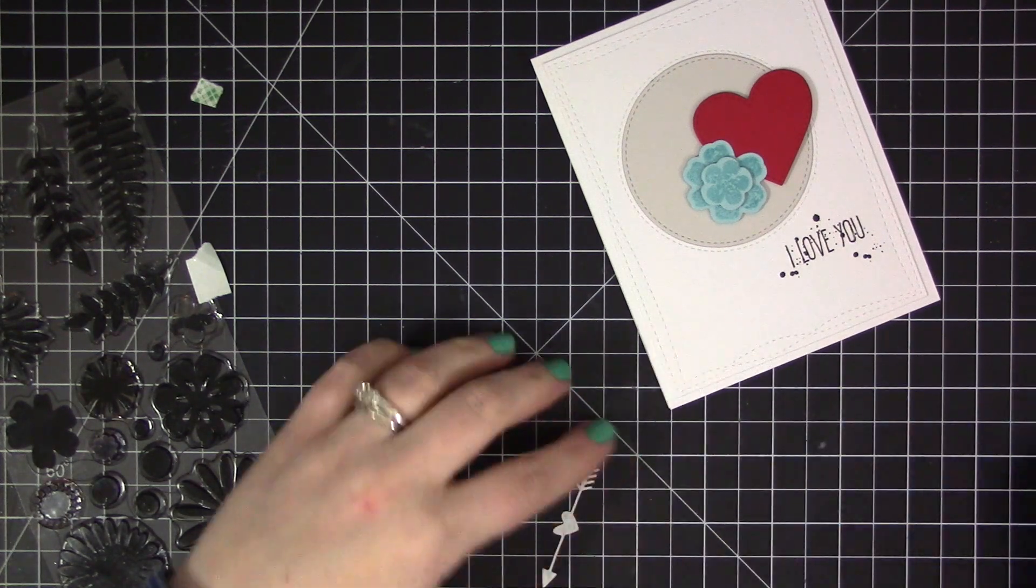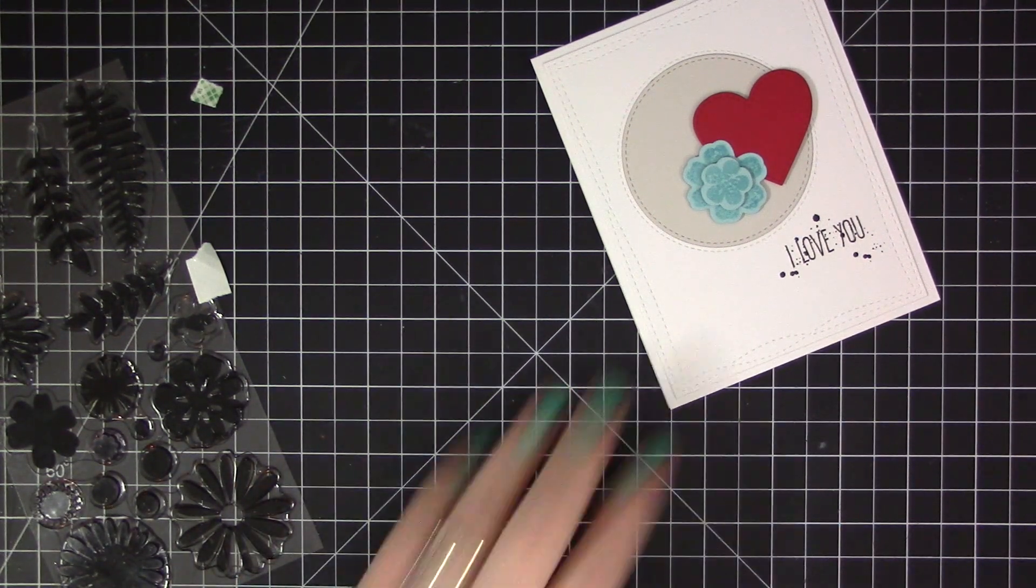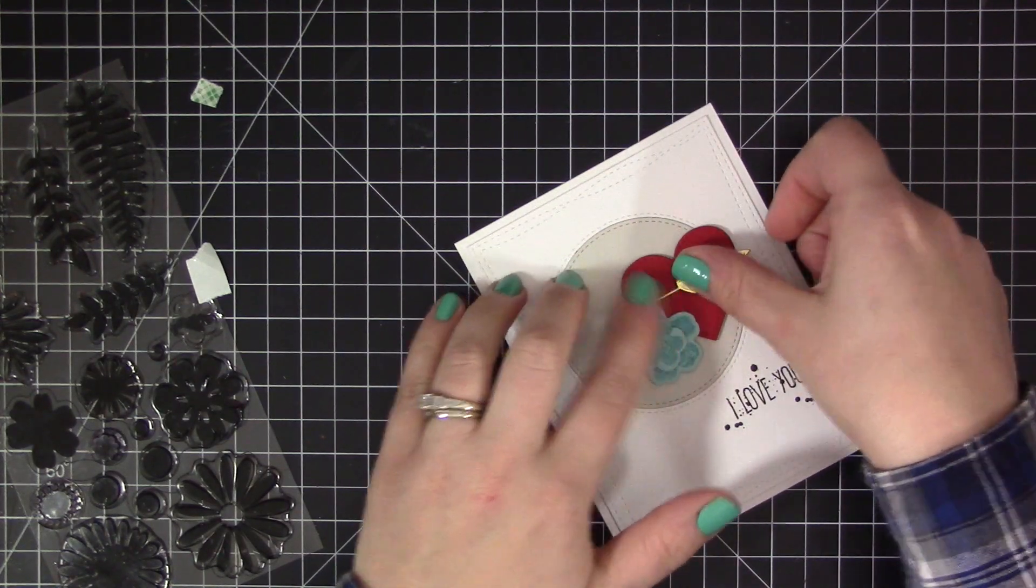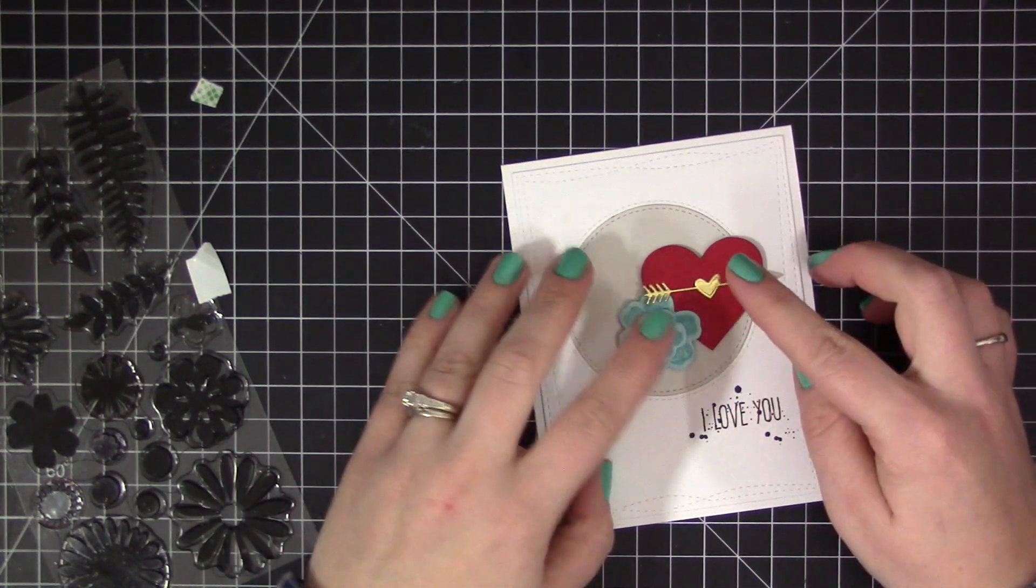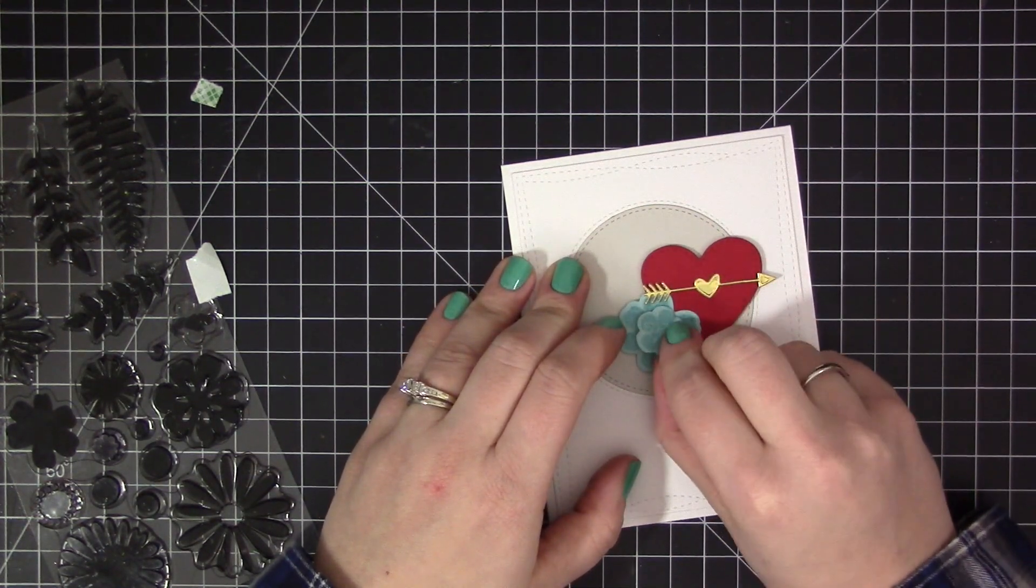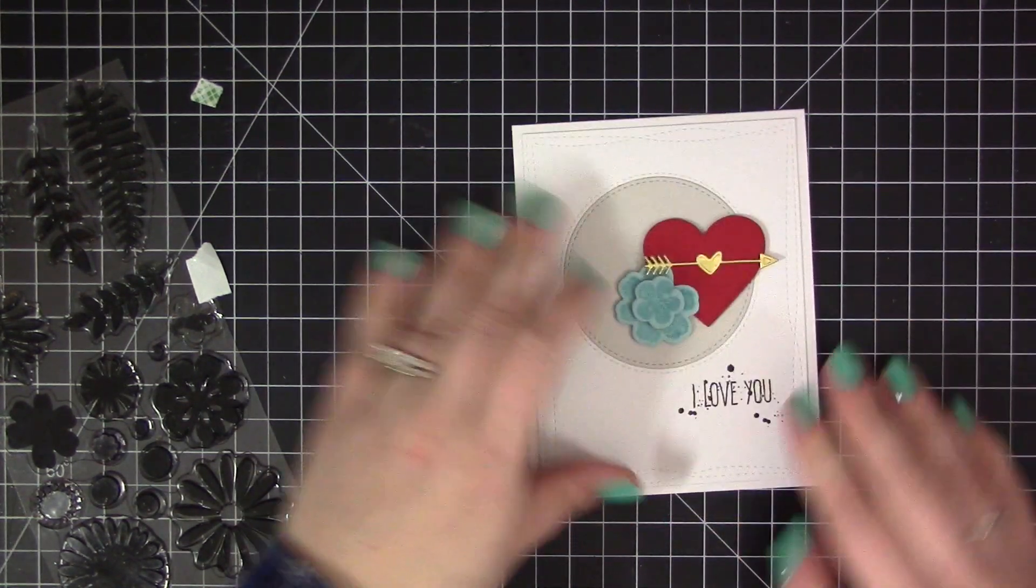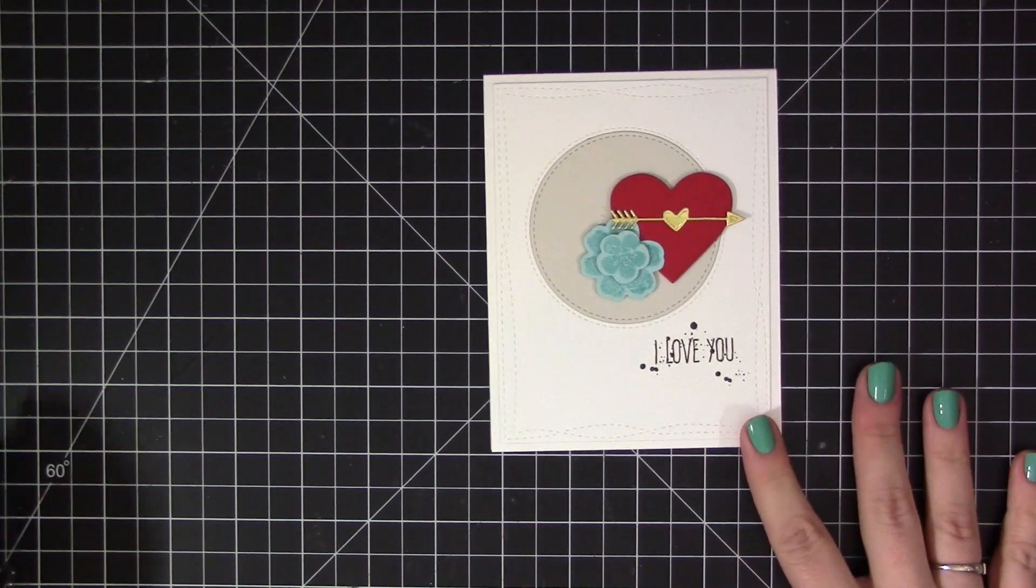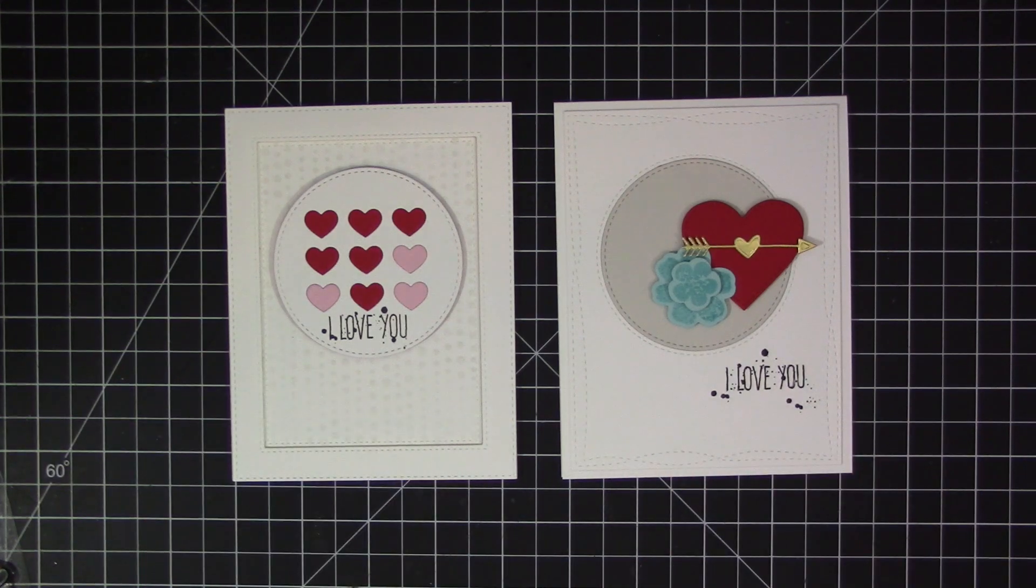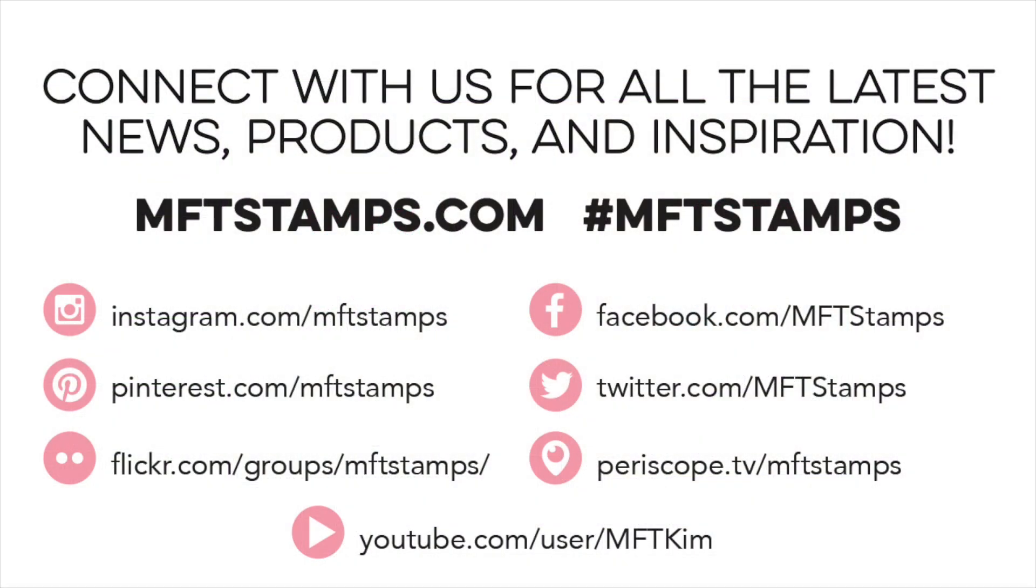To finish it off, I'm going to add this little arrow with the heart in the center. This was die cut from the Tag Builder Blueprints 5 die set and I cut it from a piece of gold foil cardstock just to add a little bit of shine to this card design. I love the different colors and textures that Keisha used on her card design and I loved recreating it. I just think it's so beautiful. That's going to complete the cards using the Inside and Out Stitch Stacks dies. Thank you so much for watching this video and we will see you next time.